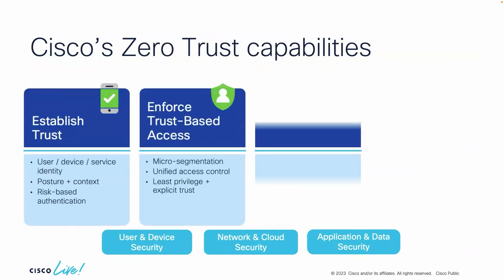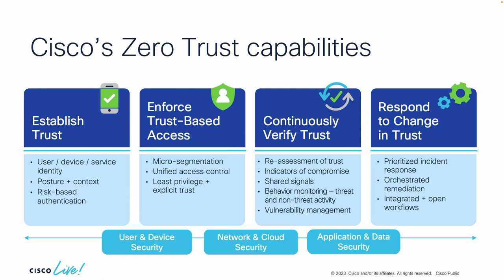As you apply those principles, there are four main steps to consider. First, how you establish trust with your devices and users — gather context, do posture assessment, take into consideration different risks. Once you establish trust, you enforce it through micro-segmentation, unified access, and least privilege access principles, not only at the perimeter but at the user level. After that, you constantly re-evaluate and respond to changes in trust — if you see indicators of compromise, you have to be able to apply policy changes dynamically.